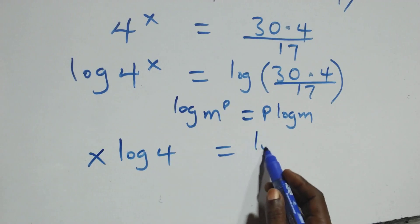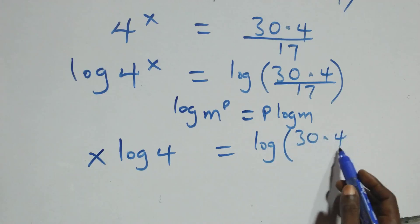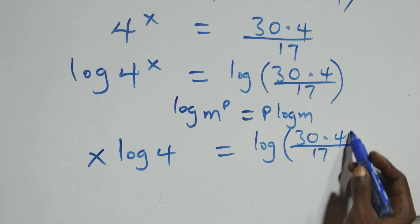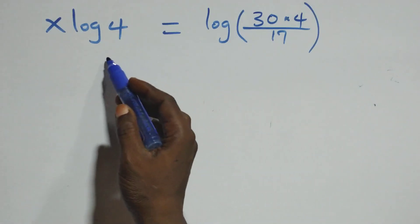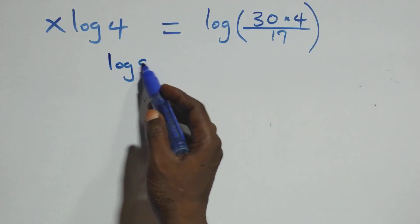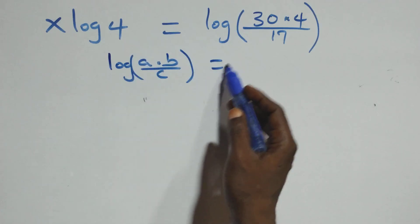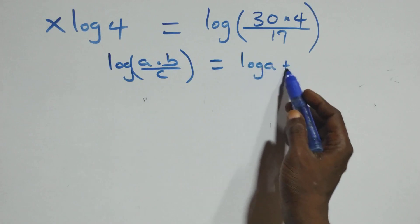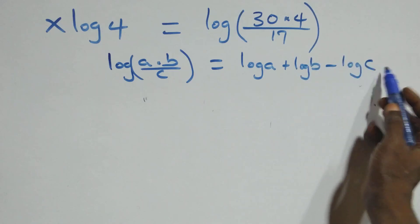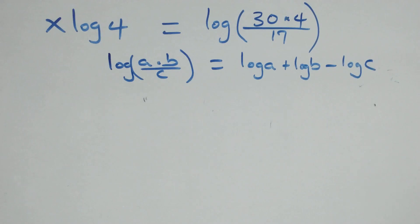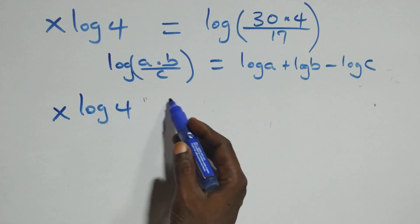x·log 4 equals log(30 × 4 / 17). Using the law of logarithms, log(a × b / c) can be rewritten as log a + log b − log c.